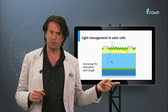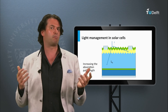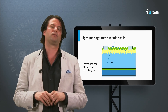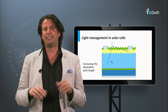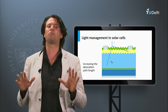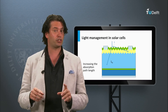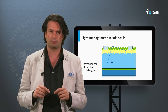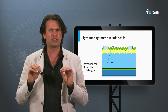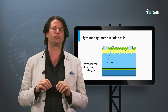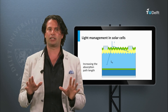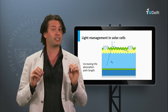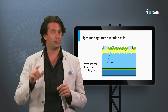Here you can see an example of scattering at microscopic texture which enhances the absorption path length in the absorber layer. In summary, this week we have learned some important concepts: we discussed how to determine the performance of a solar cell using external parameters, and discussed important design rules for solar cells. Next week we shall discuss the most dominant PV technology in the market — crystalline silicon. See you next week.